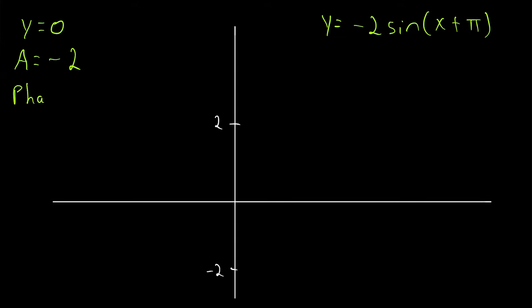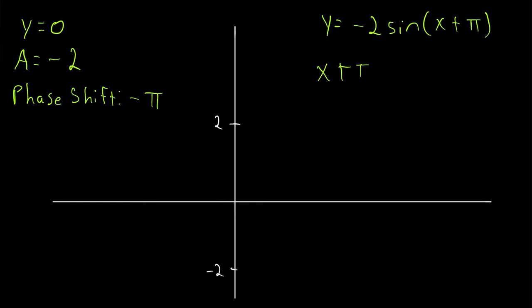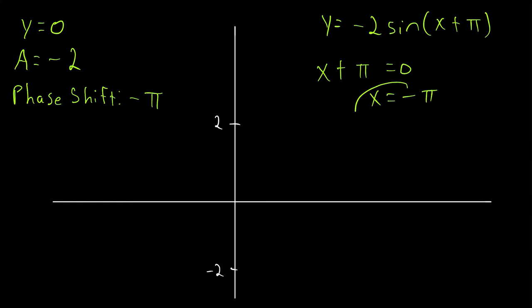Then we want to find our phase shift. Since x has a coefficient of one, we can immediately see the phase shift is going to be negative pi. In general, we can find the phase shift by setting the stuff inside the sine function — in this case x plus pi — equal to zero, giving us x equals negative pi. This means sine of zero occurs at x equals negative pi, so that is our phase shift.